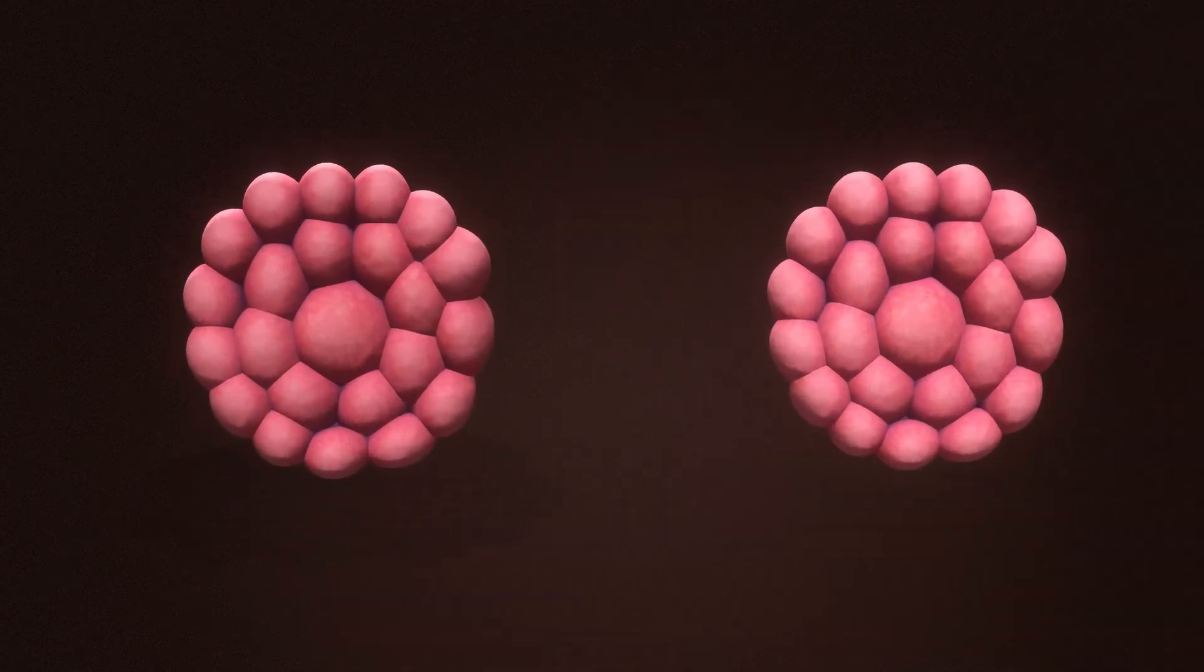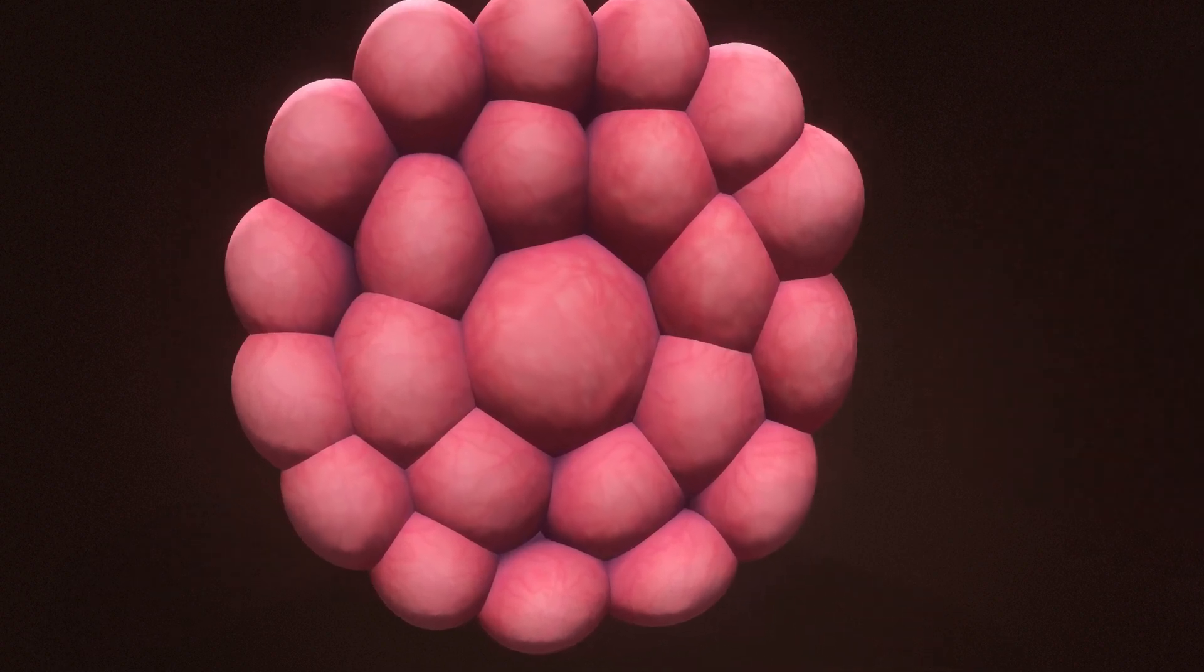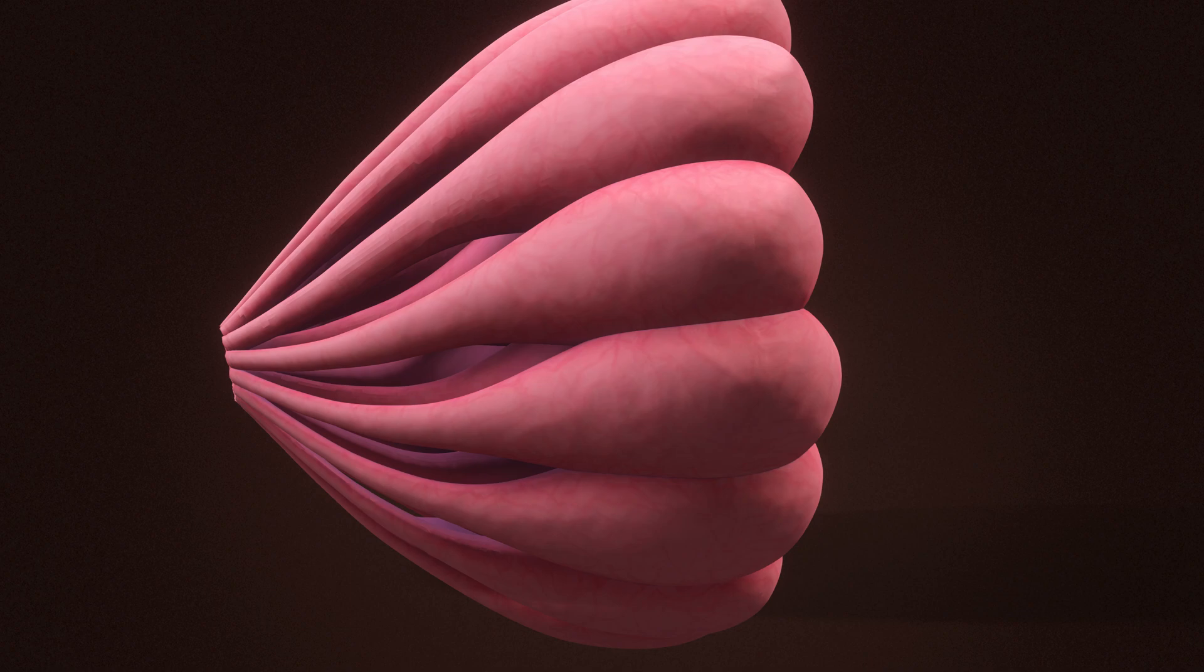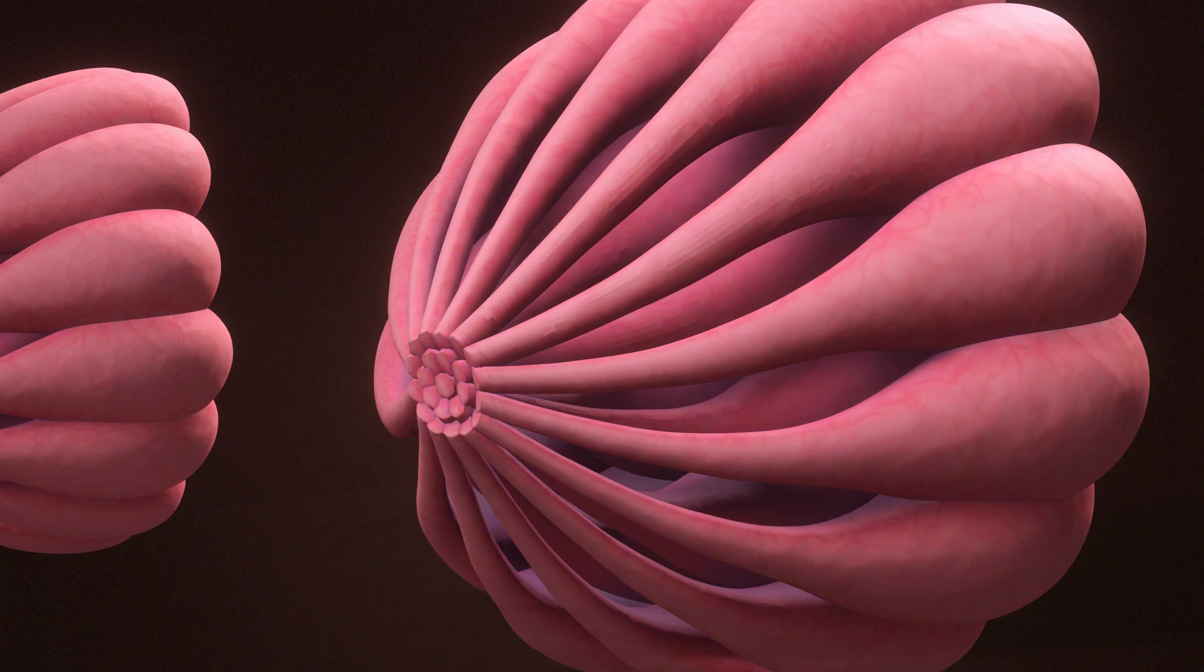The mammary glands are specialized organs unique to mammals. They are responsible for producing milk to nourish offspring. Composed of lobules and ducts, these glands adapt during pregnancy and lactation, increasing in size and activity.